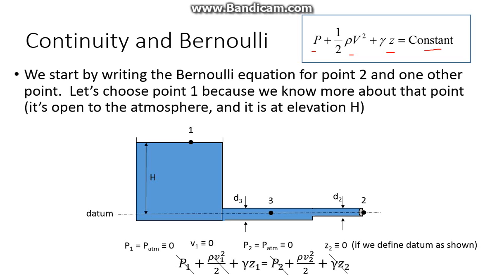So if we look between points one and two, we can write Bernoulli for both sides. But as you'll see, I've already crossed out the pressure terms here because it's atmospheric up here and out here. They're both in contact with the atmosphere. And then if we define our datum down here at the bottom of the tank, we can just say that this guy is zero.